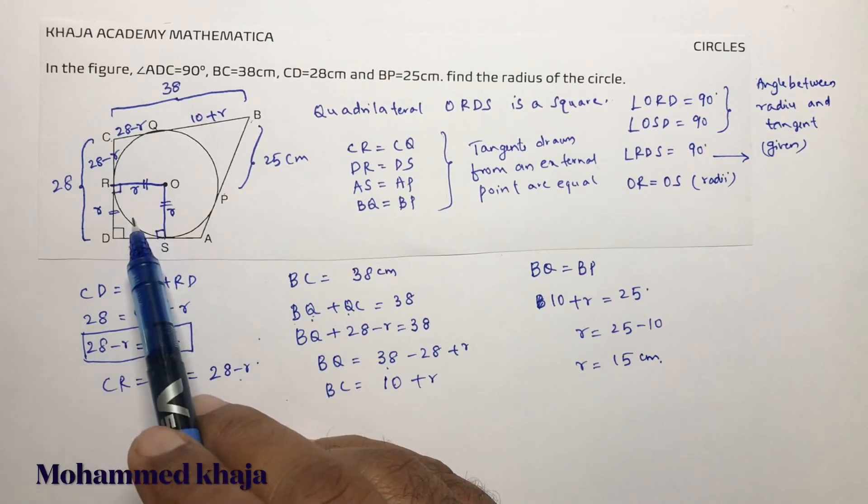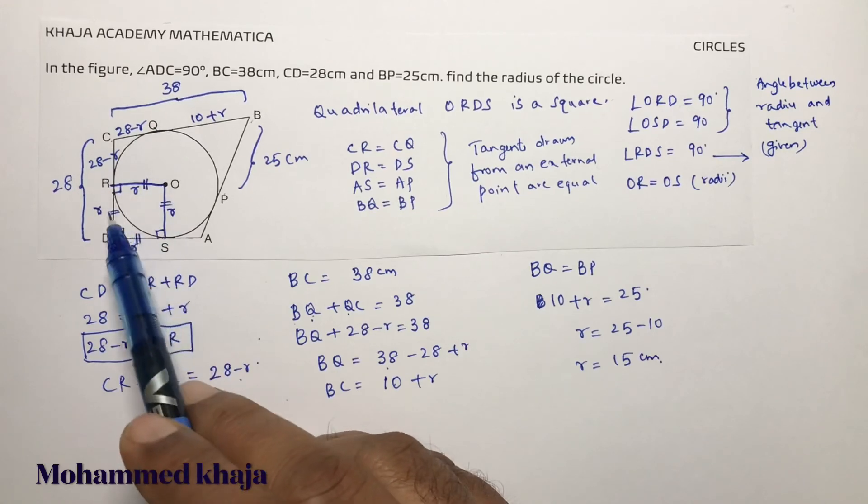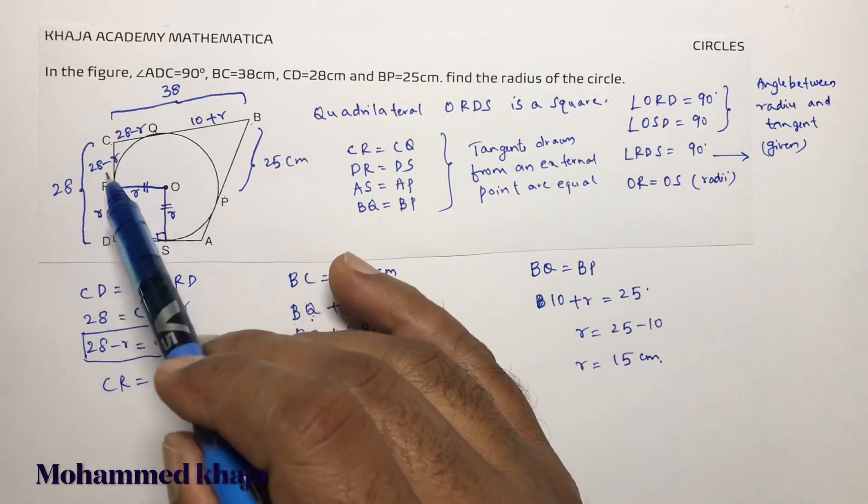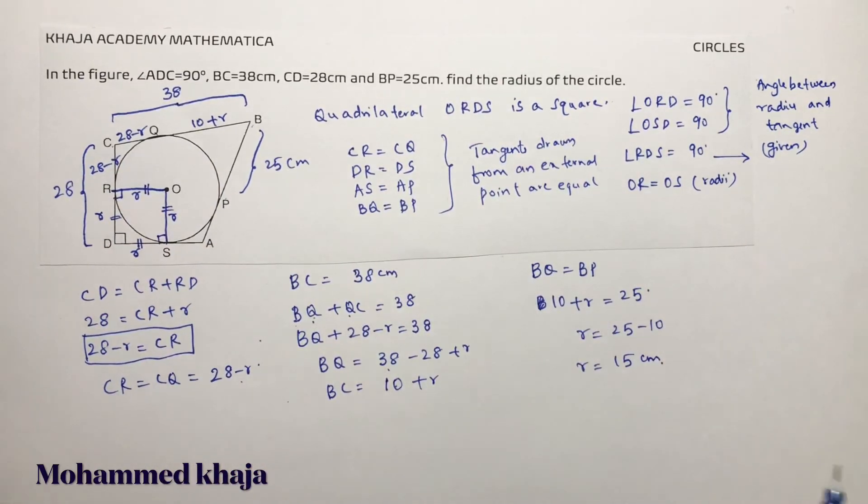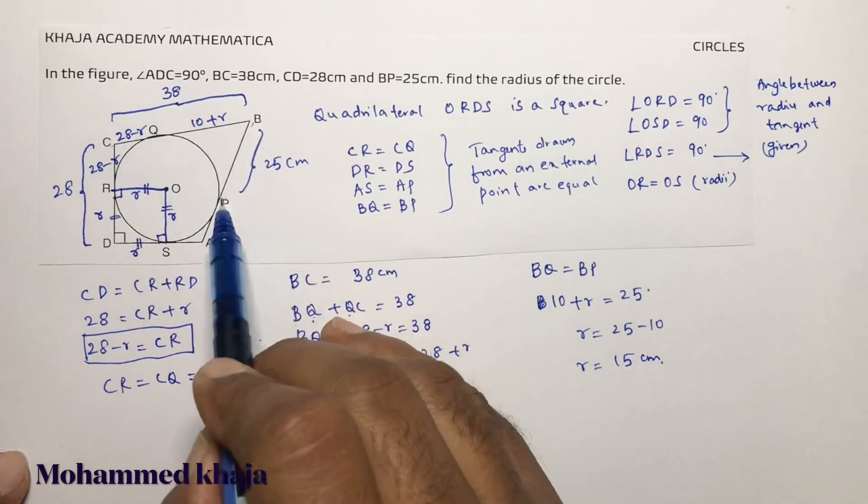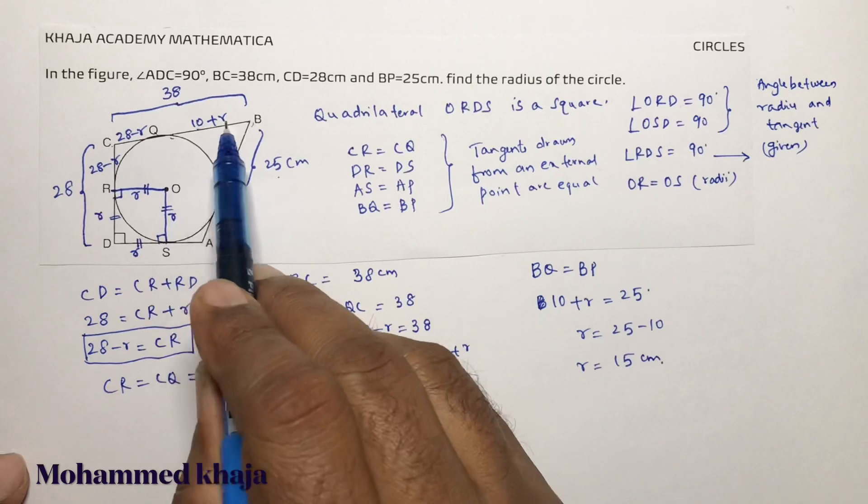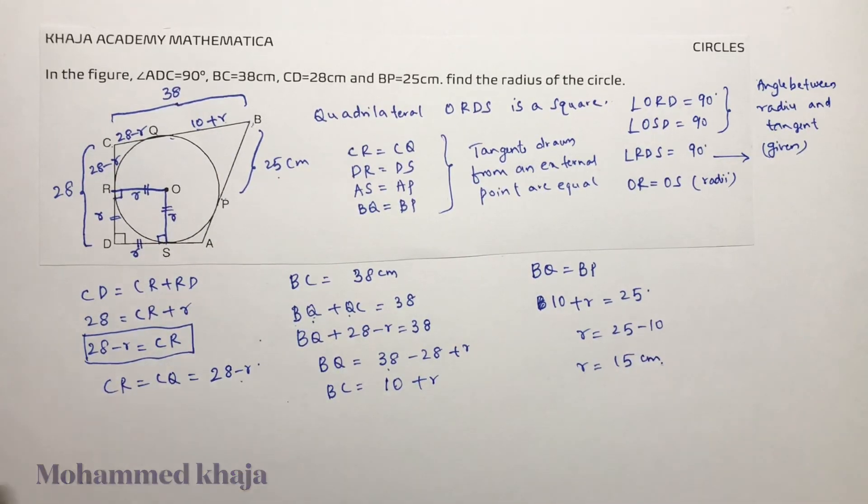First prove this is a square. As it is a square, this is radius, so these sides will be equal. So this is R. Then start doing: subtract from here, then tangents drawn from external point are equal, you'll get the answer. So at the end you'll get BQ equals BP, but BP already they gave 25cm. So BQ is 10 plus R. So 10 plus R equals 25, so R is 15cm.